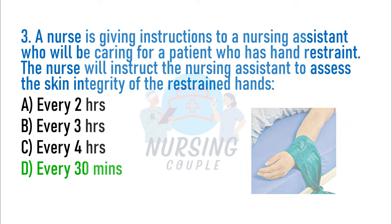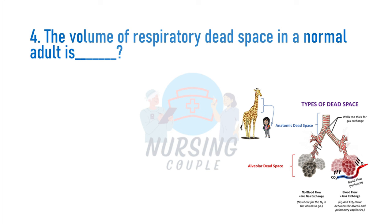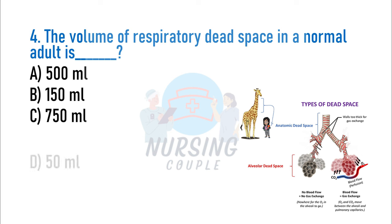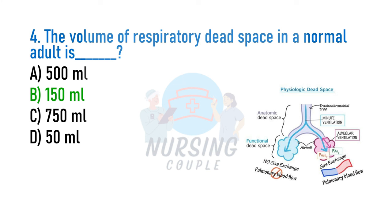Restraints are removed every 2 hours to facilitate range of motion. The volume of respiratory dead space in a normal adult is: A. 500 ml, B. 150 ml, C. 750 ml, D. 50 ml. The answer is Option B: 150 ml. Respiratory dead space represents the volume of inspired air that does not participate in gas exchange. The two types are anatomical dead space and physiological dead space. Anatomical dead space is the volume of air filling the conducting zone — nose, trachea, and bronchi — and equals 30% of the tidal volume of 500 ml, therefore 150 ml.